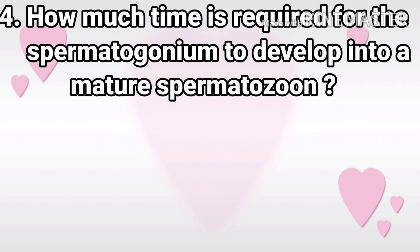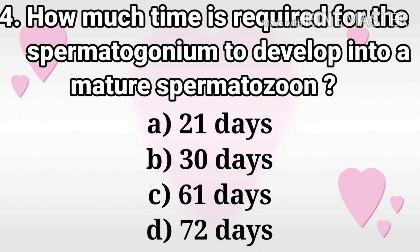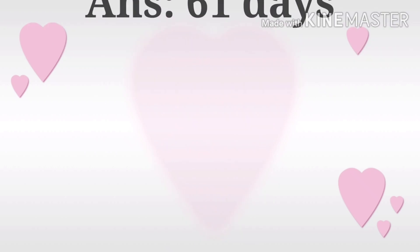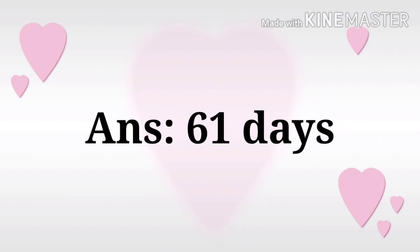Next question: How much time is required for the spermatogonium to develop into a mature spermatozoon? The options are 21 days, 30 days, 61 days, and 72 days. The answer is 61 days.